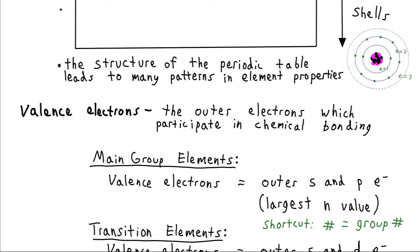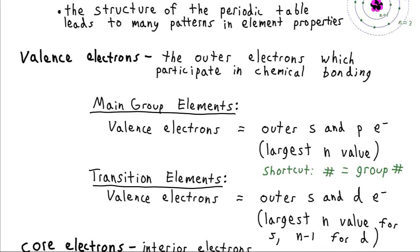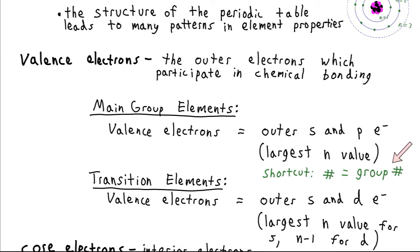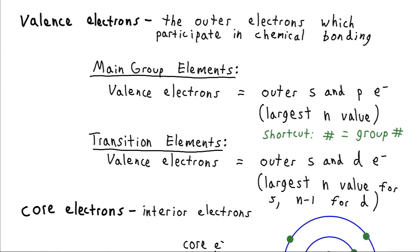For the main group elements, these valence electrons are just going to be equal to the s electrons and the p electrons — whatever has the largest n value, because that's going to be the highest energy level. A shortcut for the main group is to just look up the group number using the classic notation: 1a, 2a, then skip to the b's, then back up to 3a, 4a. For the transition elements, the number of valence electrons equals the outer s electrons and the outer d electrons. The d electrons are one energy level less than the s electrons, but they're very close in energy and accessible for forming chemical bonds.